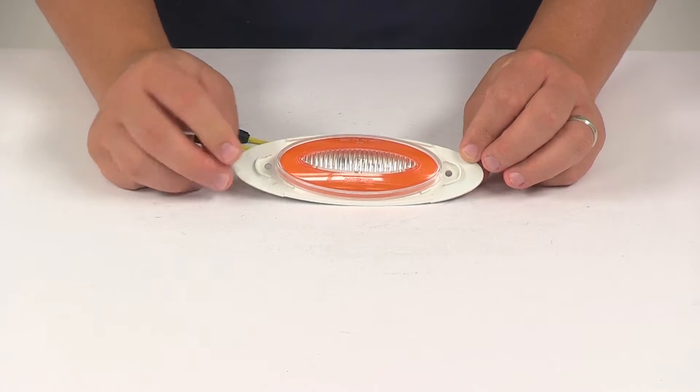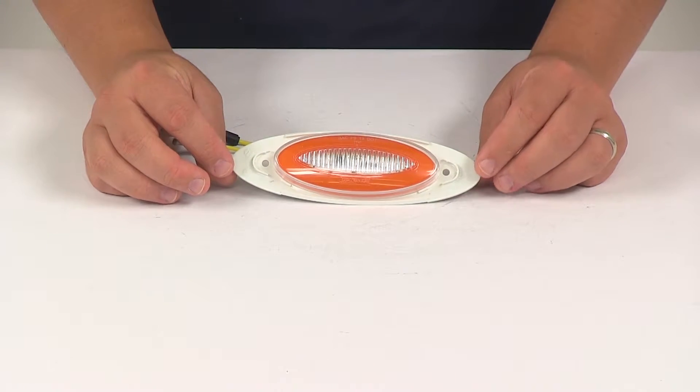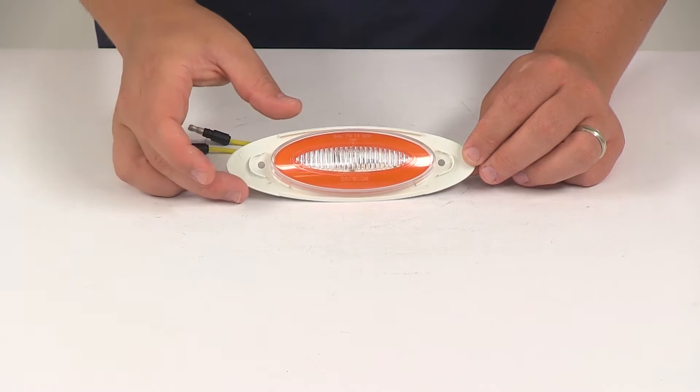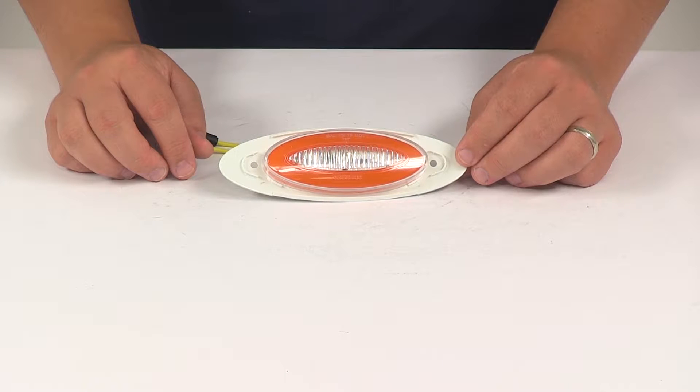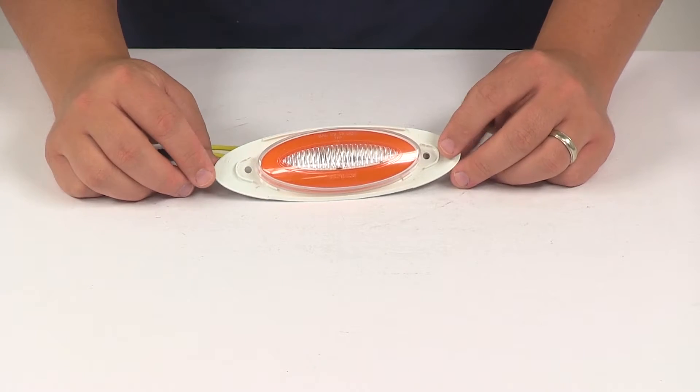Once you have this installed, there is a separate piece that can be added to give it a nice clean finished look. That's a chrome bezel that snaps over the outer rim or frame, and it's sold separately. It's available here at eTrailer.com.